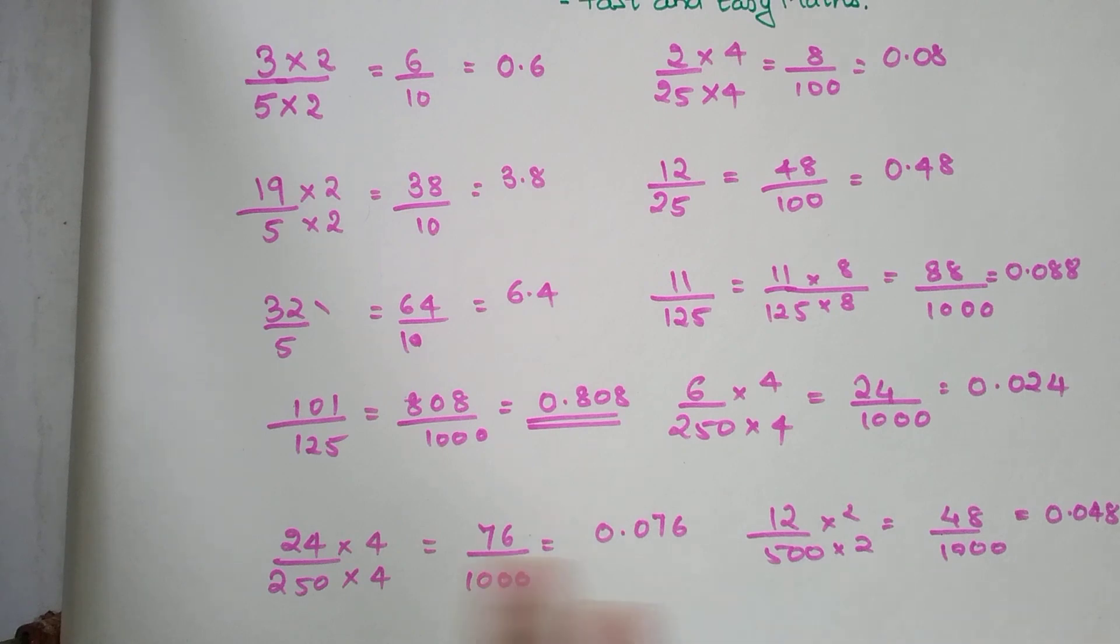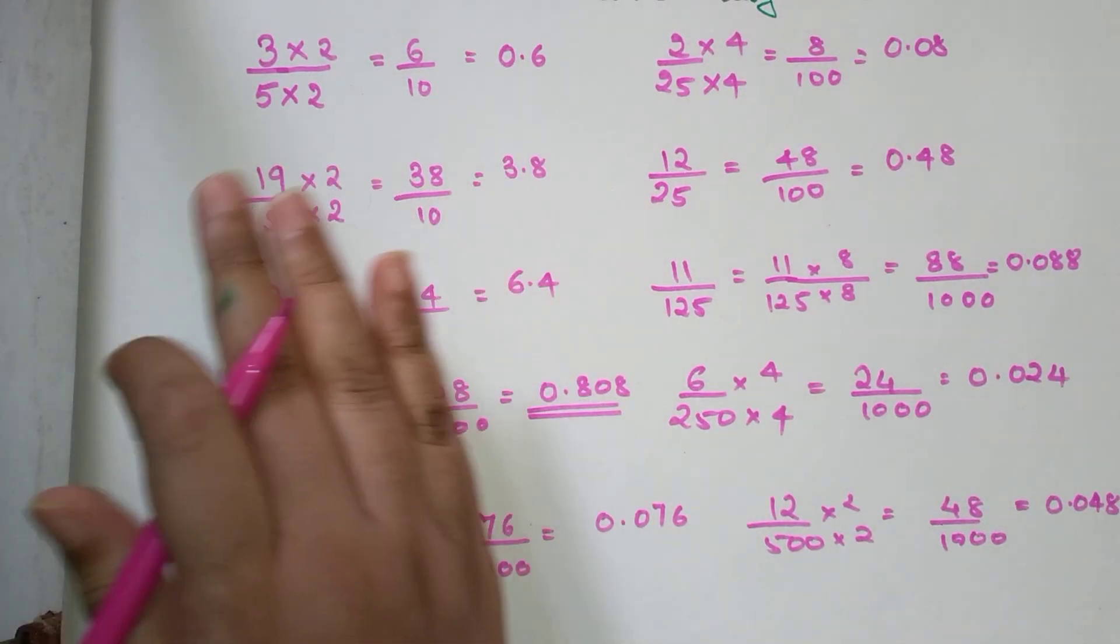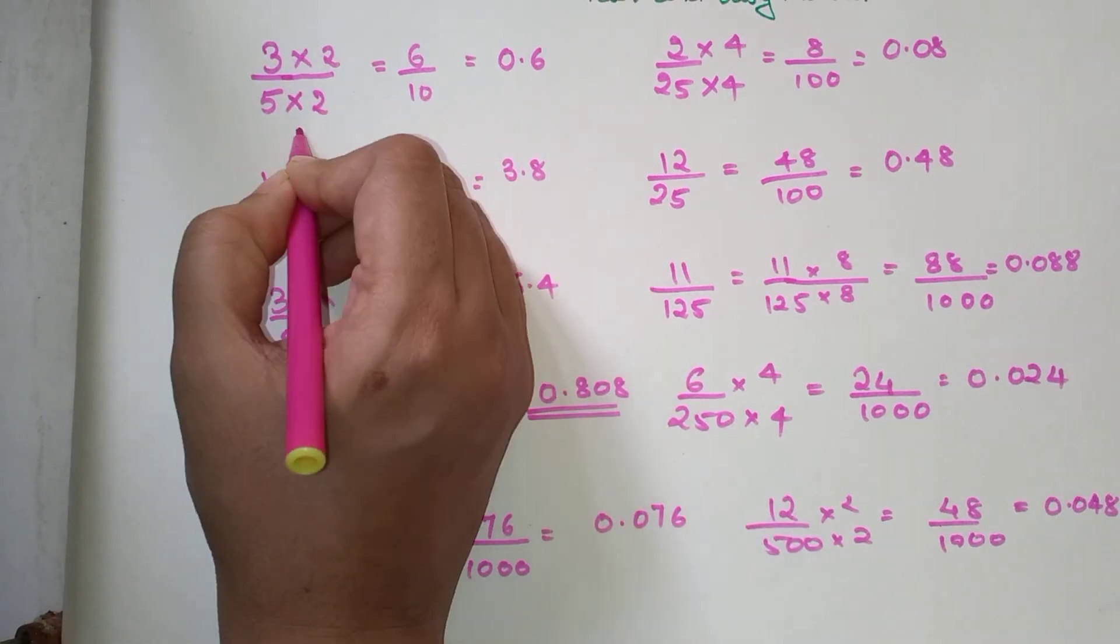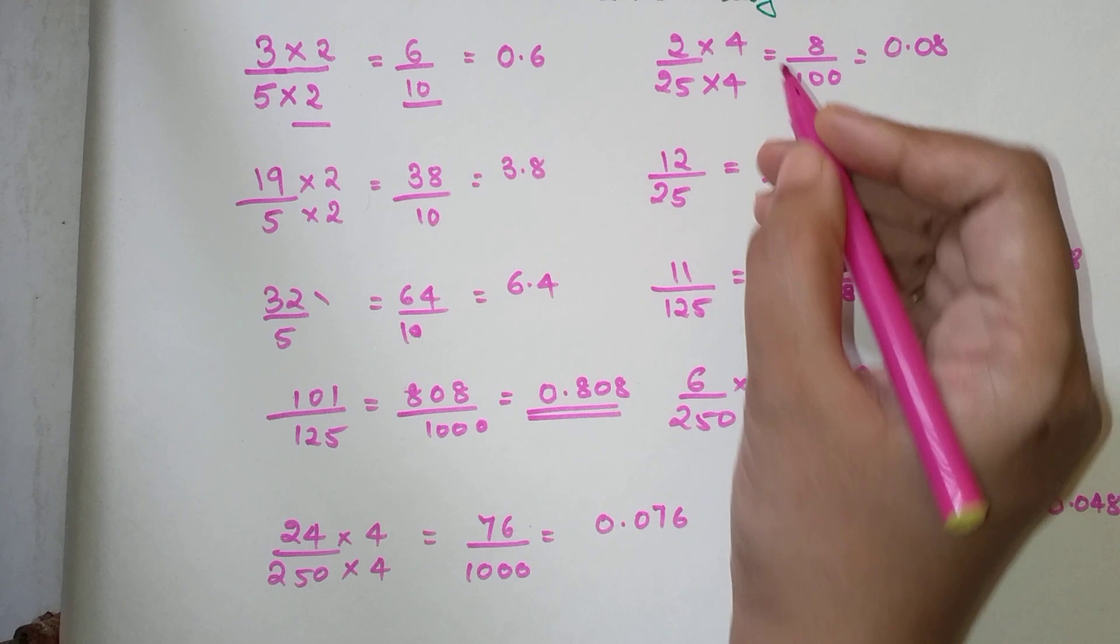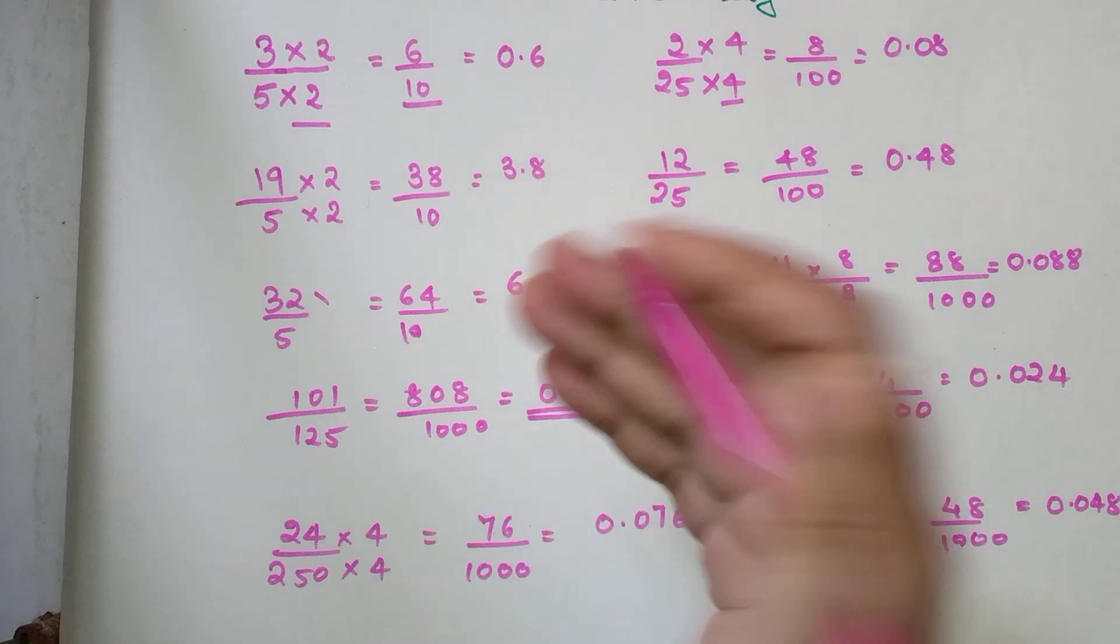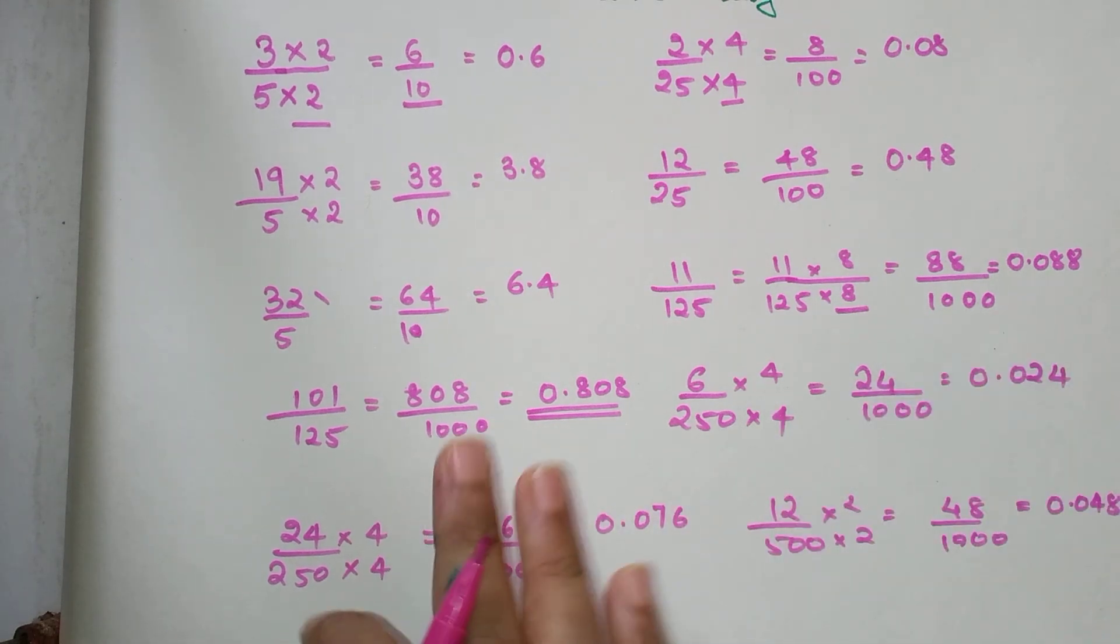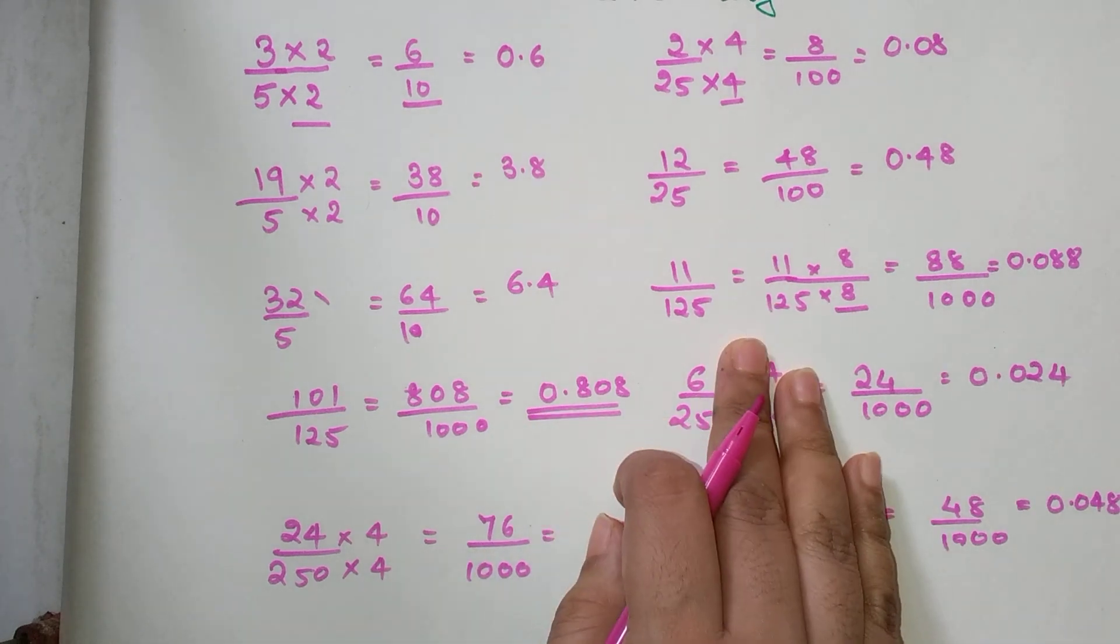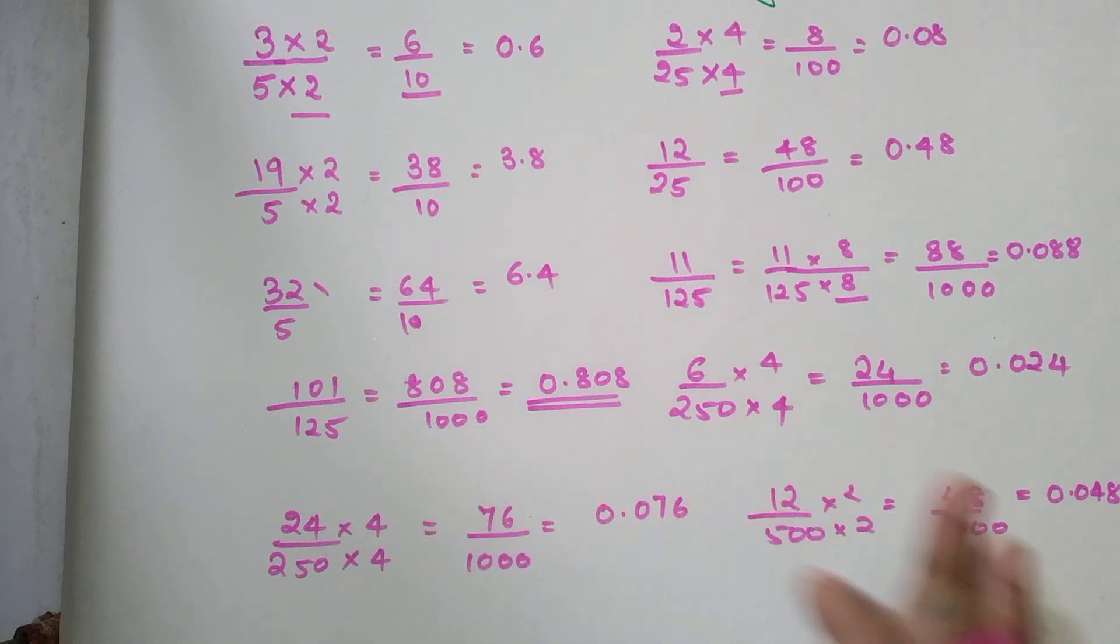As a quick revision: when we divide any number by 5, we multiply the numerator by 2 and the denominator becomes 10. If dividing by 25, multiply the numerator by 4 and denominator becomes 100. If dividing by 125, multiply numerator by 8 and denominator becomes 1000. If dividing by 500, multiply numerator by 2 and divide by 1000.